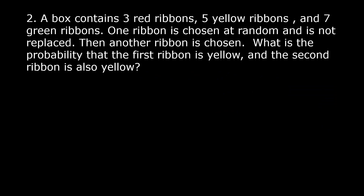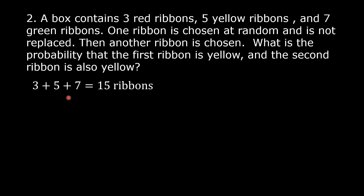Example 2: A box contains 3 red ribbons, 5 yellow ribbons, and 7 green ribbons. One ribbon is chosen at random and is not replaced. Then another ribbon is chosen. What is the probability that the first ribbon is yellow and the second ribbon is also yellow? Let us first find the total number of ribbons. 3 plus 5 plus 7 is equal to 15, so the total number of ribbons is 15.